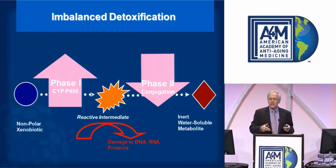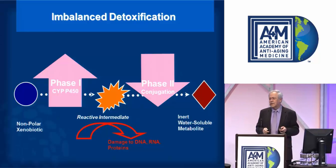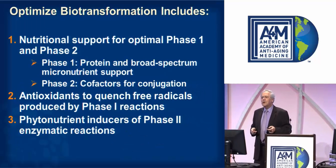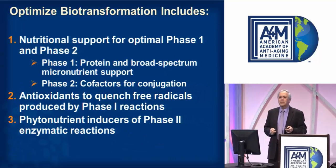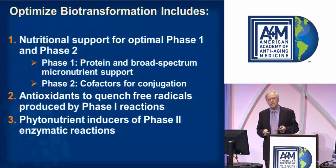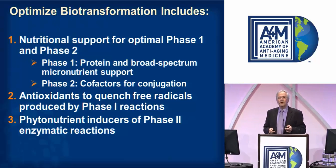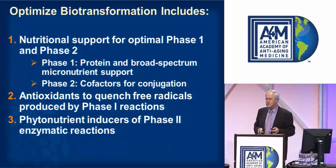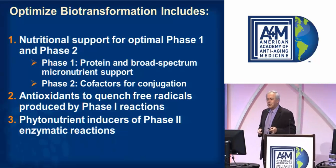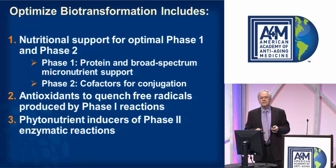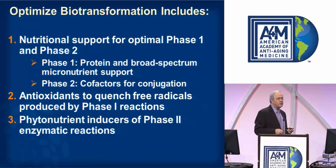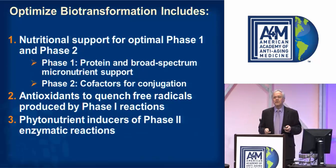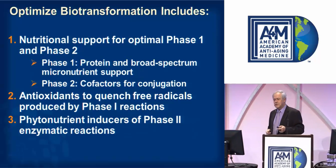Sometimes genetically people are designed for poor phase two detoxification, and sometimes it's a matter of up-regulated phase one. To optimize and balance biotransformation, we can use nutrition to support both phases. We also want antioxidants to quench the free radicals produced from phase one, and phytonutrients to induce phase two.